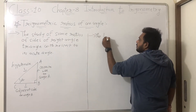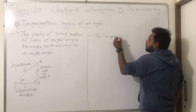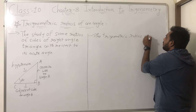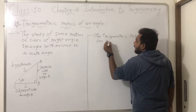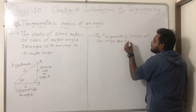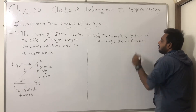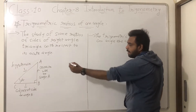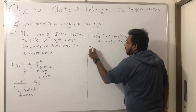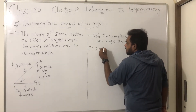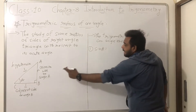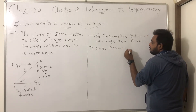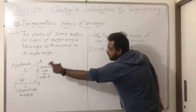So the trigonometric ratios of an angle are as follows. Now let's take a look at the trigonometric ratios of angle A.